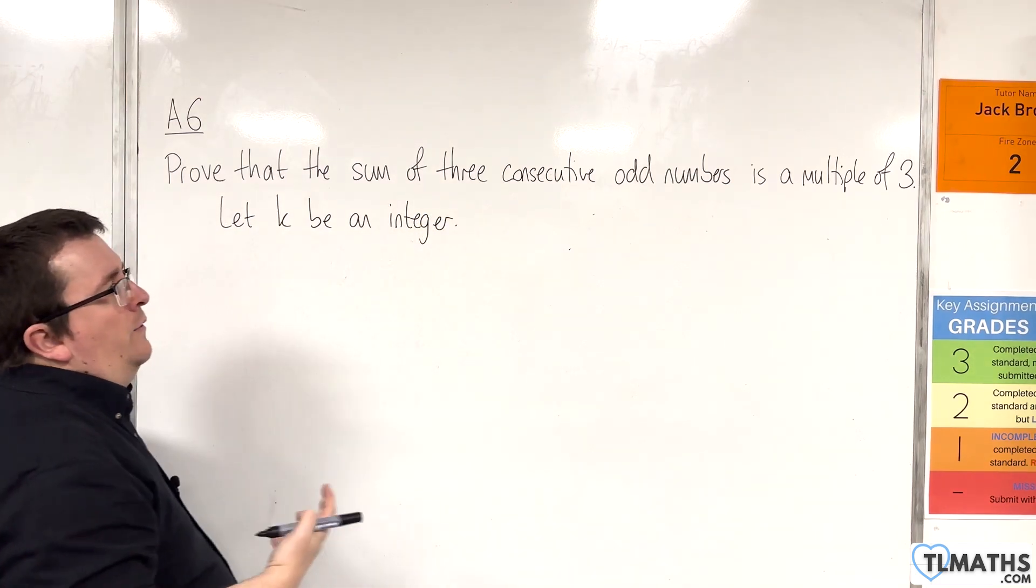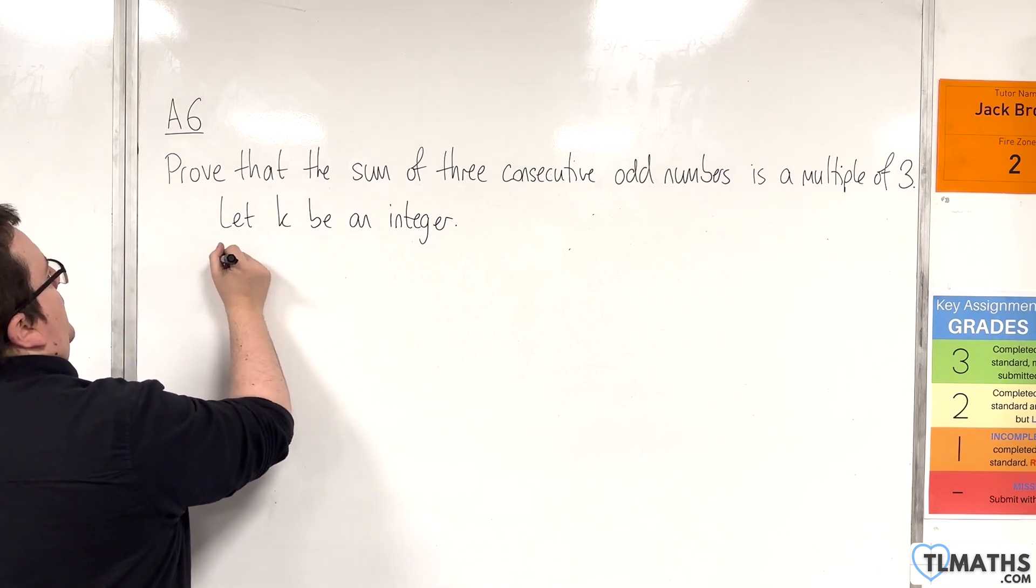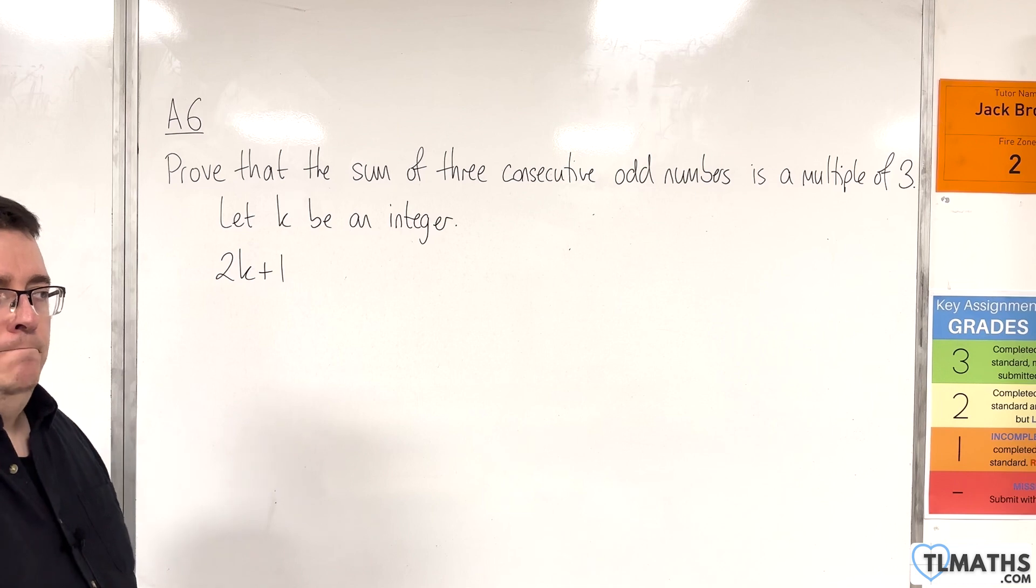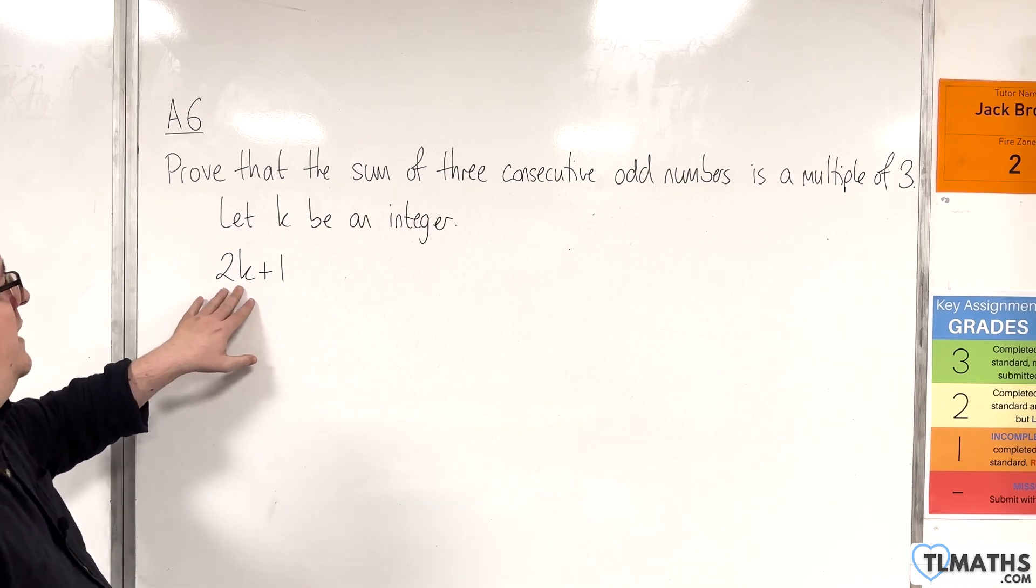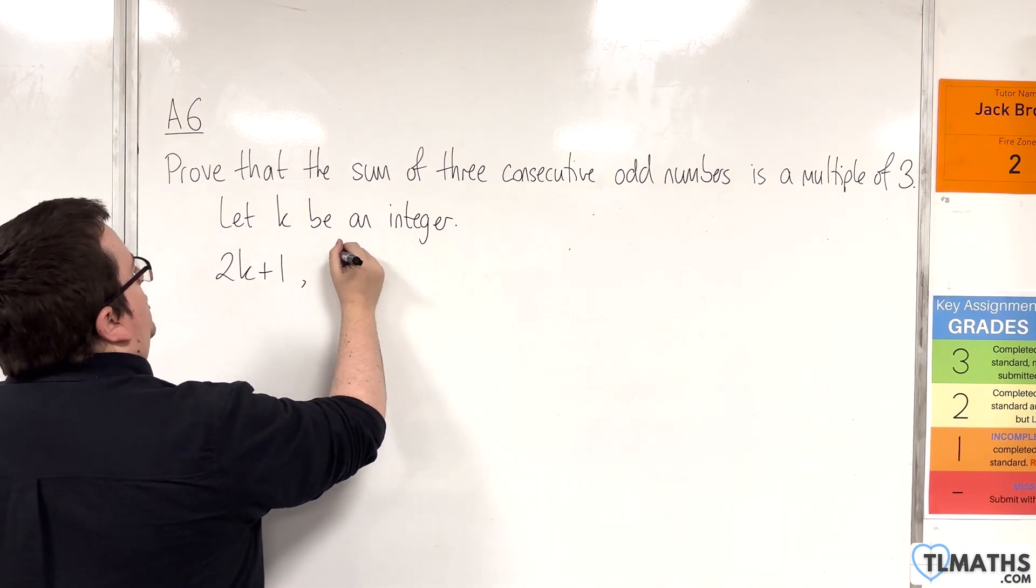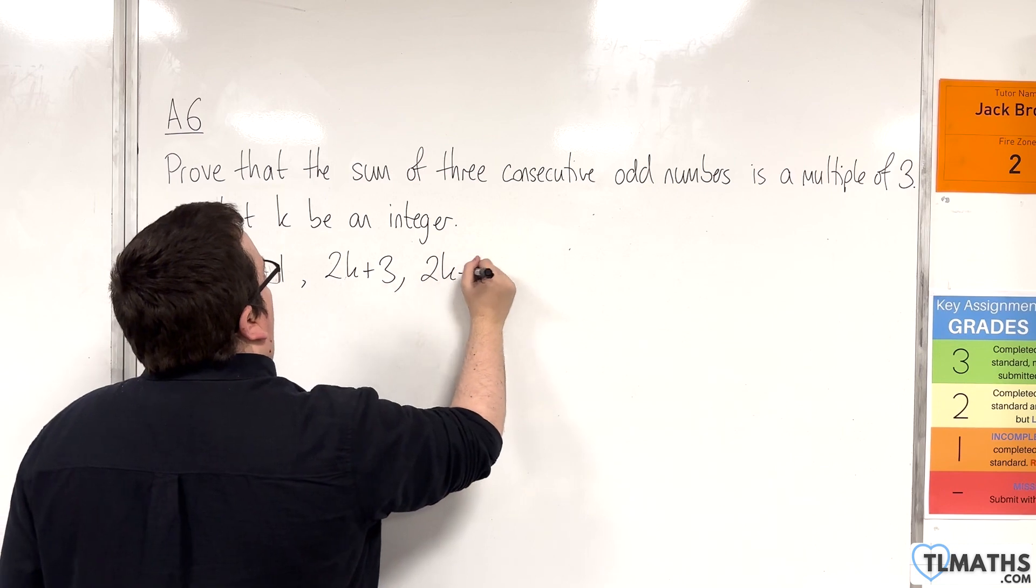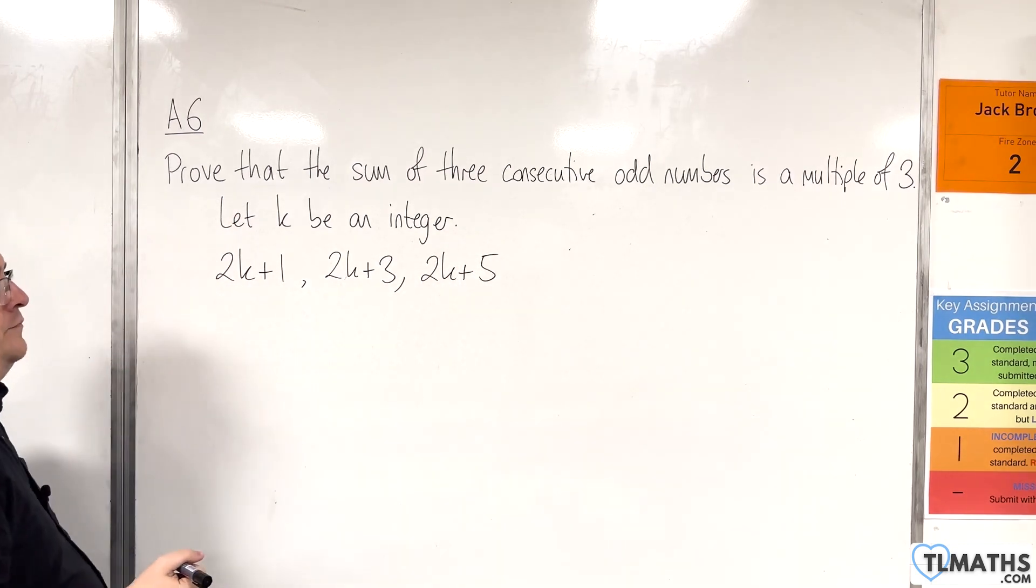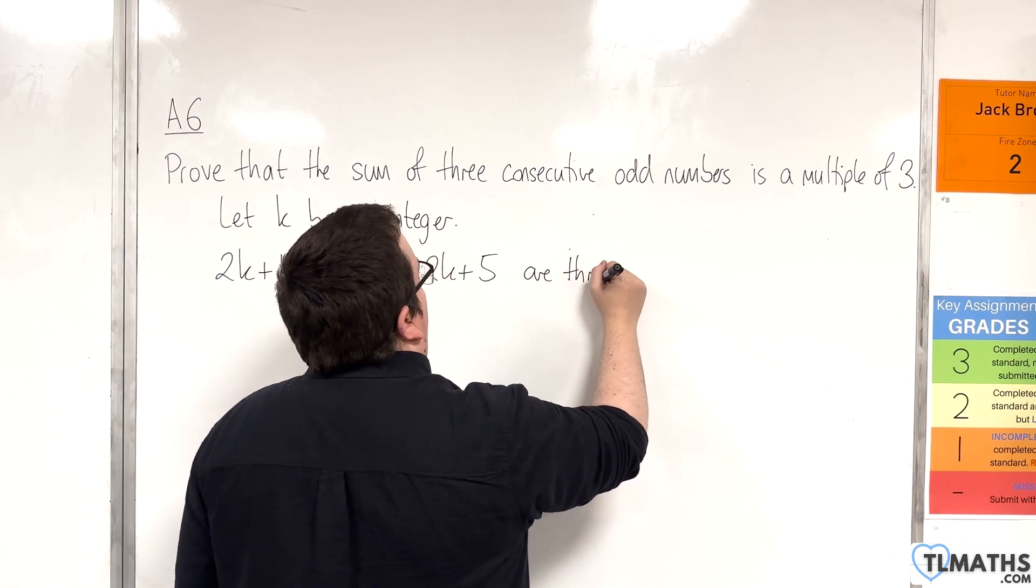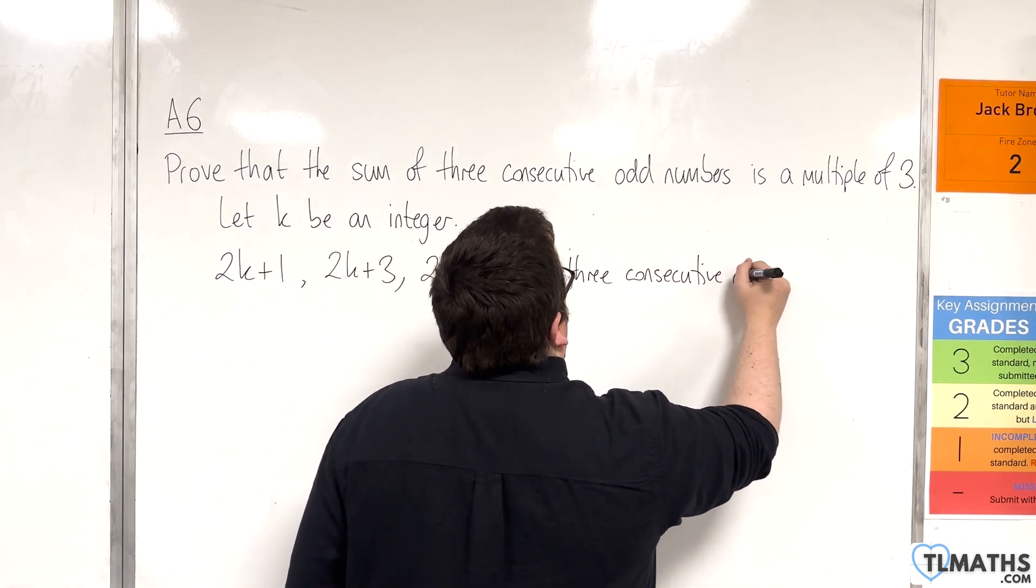So we now need to write down three consecutive odd numbers. If k is an integer, then 2k plus 1 has to be an odd number, because it's one more than an even number. So the next odd number would be 2k plus 3, and the next one would be 2k plus 5. So these are three consecutive odd numbers.